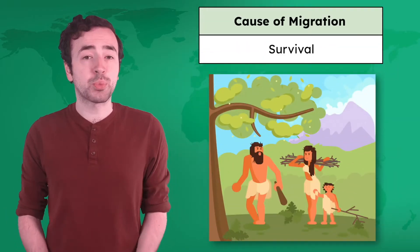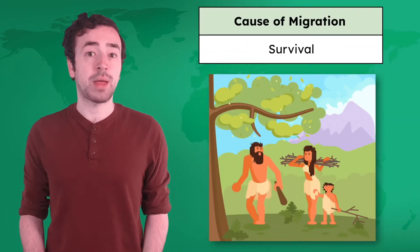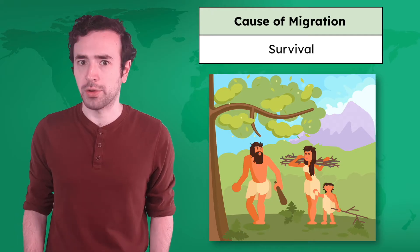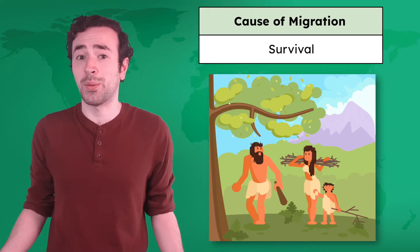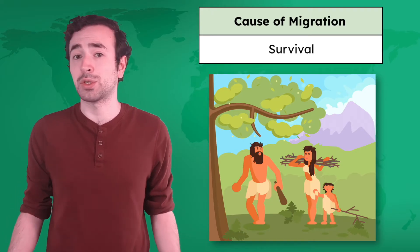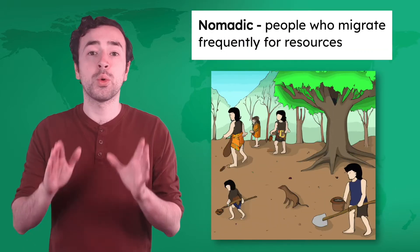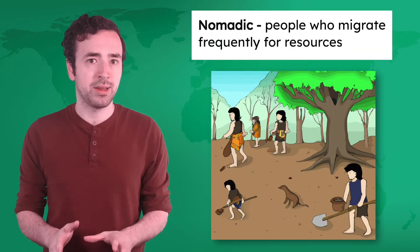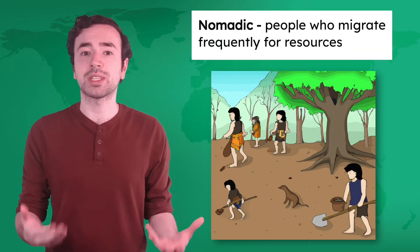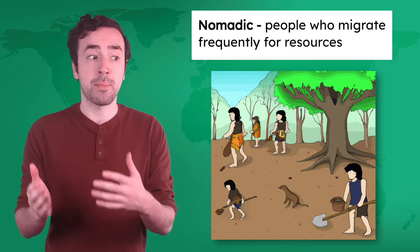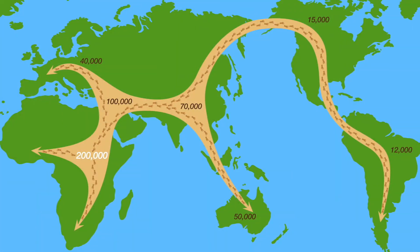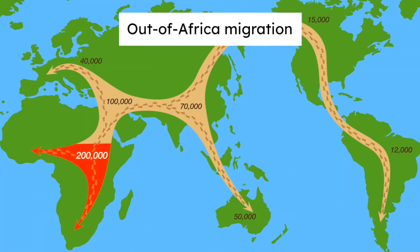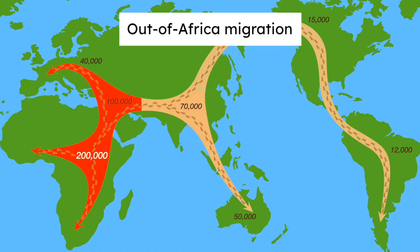Early migration was pretty straightforward — our ancestors were hungry. Early humans relied on the plants, animals, and waterways around them for survival. These humans were also nomadic. When their food and water sources became scarce, they migrated to find more. This search for resources fueled the out-of-Africa migration over tens of thousands of years.